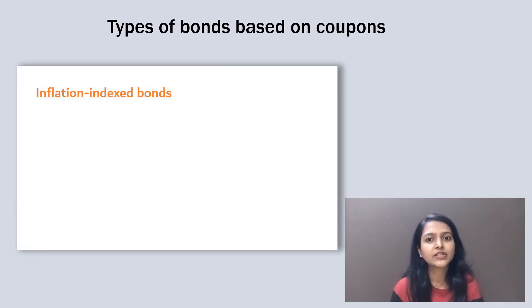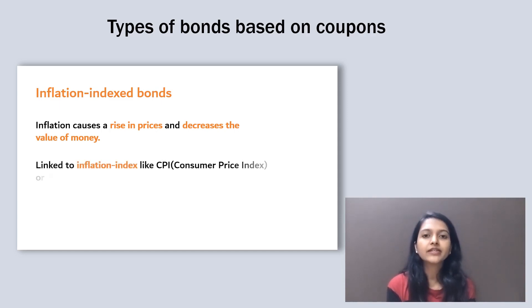And the last one is inflation indexed bonds. So we know inflation reduces the value of money. Therefore, these bonds help investors protect against inflation. So how it works is bonds are linked to some inflation index like consumer price index or wholesale price index. So that any adjustment in the inflation is reflected in the returns of the bond.